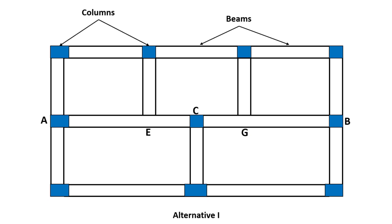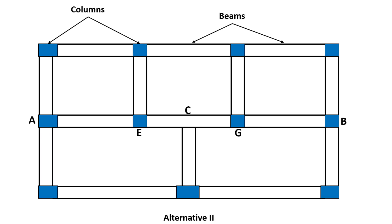In case 1, spans AC and CB will be larger and the beam will have to carry two point loads, one at E and the other at G transferred from secondary beams. This will require a heavier section for the beam. On the other hand, in case 2, with two columns provided at E and G, the beam becomes a three-span continuous beam.